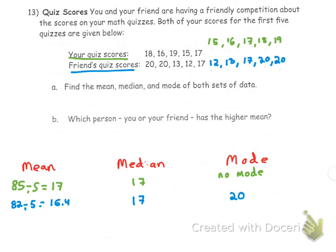Okay, so if you were looking at mode, you might think, ooh, well, your friend is the better person. They had a 20 twice, and I didn't have any 20s. But if you look at their low scores, their low scores are pretty low. So you end up seeing that average out in your data with you having the higher mean.